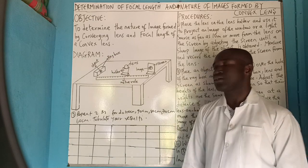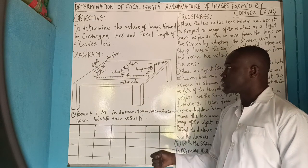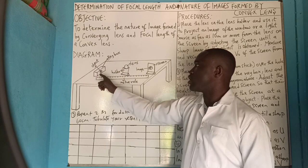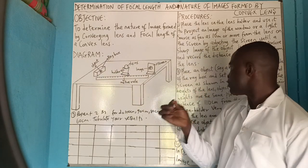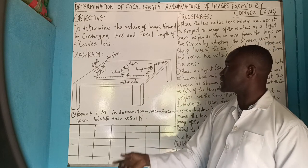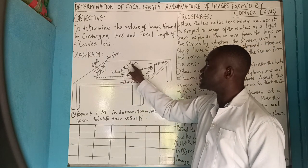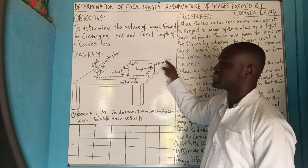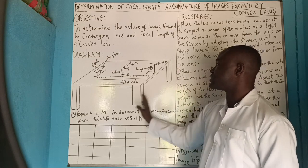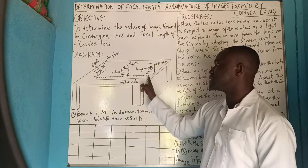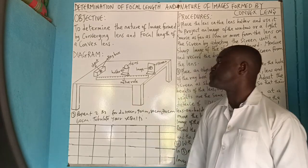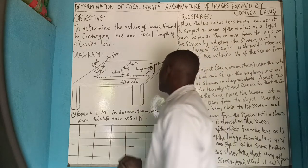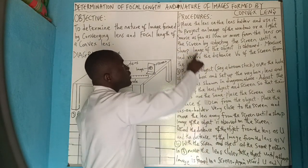Look at the apparatus setup. This is the object — the red box — the object is taken to be a broomstick. This is the lens holder, this is the lens itself, this is the image, and this is the screen. This is the table stand where the whole setup is mounted, and this is the meter rule.